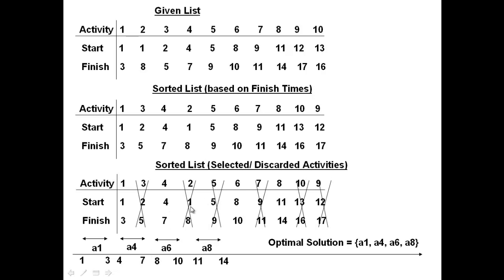You cannot pick activity two because it starts at time one, which overlaps with activity one and goes up to time eight, so it overlaps with both picked activities. Activity five starts at time five - there is an overlap. Activity six starts at time eight, which does not overlap with what you have picked so far, so you pick activity six finishing at time ten. Activity seven starts at time nine - that overlaps with activity six. Activity eight starts at time eleven, which is greater than ten, so you pick it and it goes until time fourteen. Activity ten overlaps with eight, and activity nine starts at time twelve which is also in that range. So those are the four activities you pick, and that is the optimum solution - four activities that do not overlap.